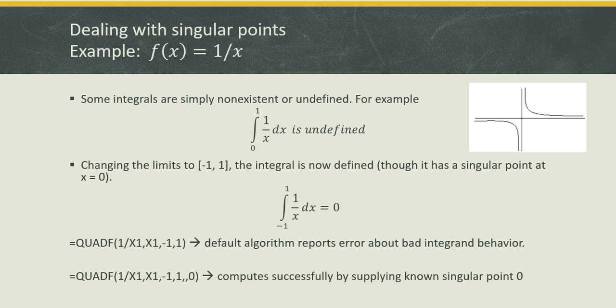However, if you try to use the default algorithm with this particular integral, it will fail because of the singular point in the integrand. We can make use of the optional arguments to tell the algorithm that we have an irregular point at x equals zero, as shown in the formula at the bottom, and that will succeed.